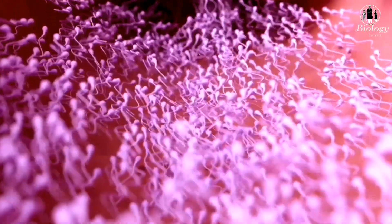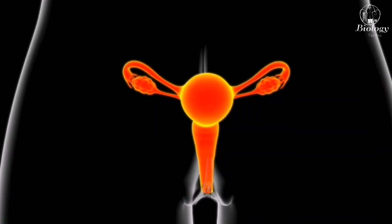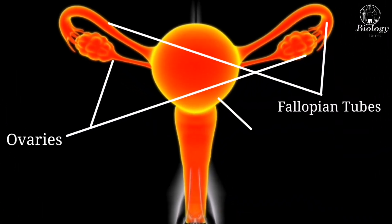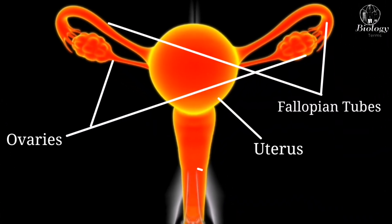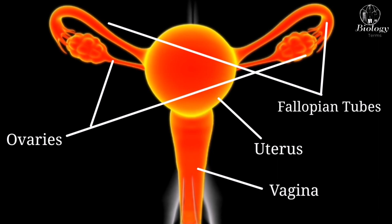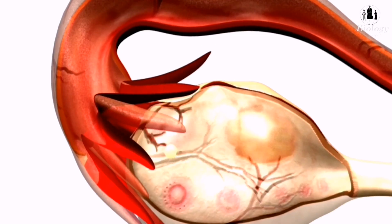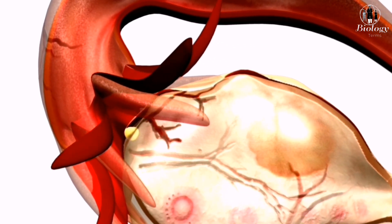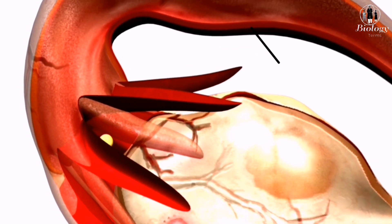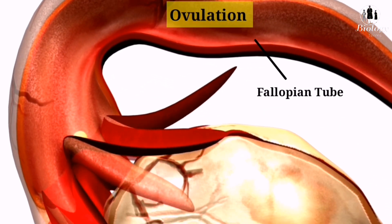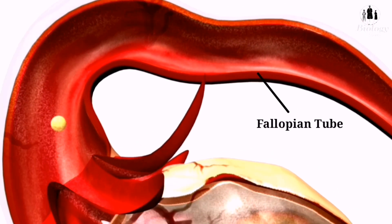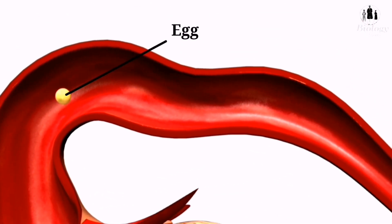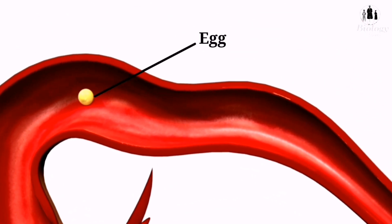The female reproductive system includes the ovaries, fallopian tubes, uterus, and vagina. Each month, one of the ovaries releases an egg cell in a process called ovulation. The egg cell then travels down the fallopian tube towards the uterus.